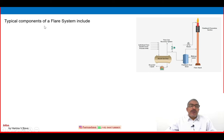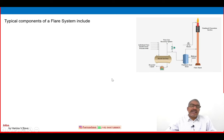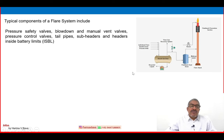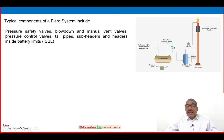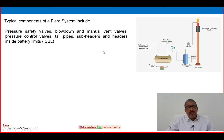In this picture you can see some of the basic components of a flare system. Let us discuss them. They include: pressure safety valve, blow down valve, manual vent valve, pressure control valve, tail pipe, sub-headers, and headers inside battery limit. These are the inlet devices from where excess gas comes to the flare system area — safety valves, relief system, blow down valve, manual valve, etc.